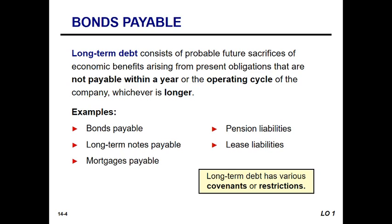Negative covenants are things the firm agrees not to do — such as not merging with other firms, not pledging assets used as security to other lenders, and not making or guaranteeing loans to other firms. Especially with closely held companies, there may be a limit on officers' compensation. In private lending agreements, covenants can include items like a debt-to-equity ratio requirement, cash level requirements, or a requirement to hold all operating funds at a specific institution. These can come in a variety of different flavors.